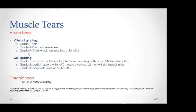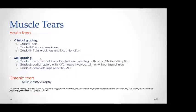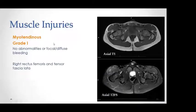Moving on to grading of muscle injuries — there is a clinical grading and an MRI grading. Grade 1 is when there is edema with no muscle disruption. Grade 2 is when there is muscle disruption of more than 5% but not complete. Grade 3 is a complete muscle tear. This grading applies to acute tears only; for chronic muscle tears, all you see is muscle atrophy with fatty infiltration.